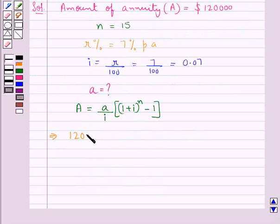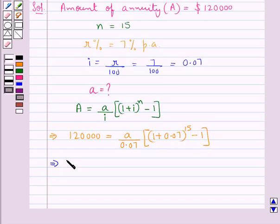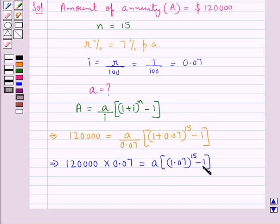So further we have 120,000 into 0.07 which is i, to the power of n that is 15 minus 1. So 120,000 into 0.07 is equal to a into 1.07 to the power of 15 minus 1.